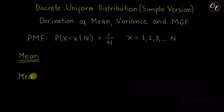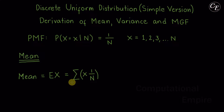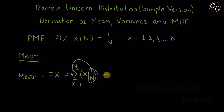The mean in general has a formula of expectation of X, where X is the random variable. For a discrete random variable, it is equal to the summation of x times the probability mass function, which in this distribution is 1 over n. The random variable x has values from 1 to n, and since 1 over n is a constant expression, we can move it outside of the summation.